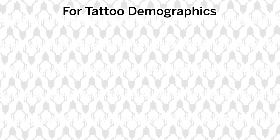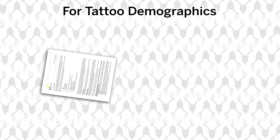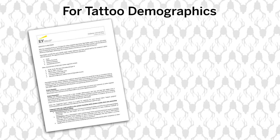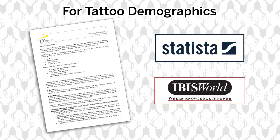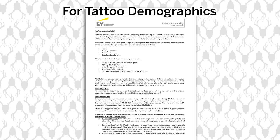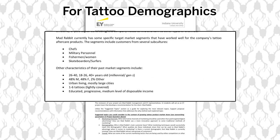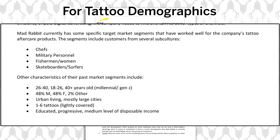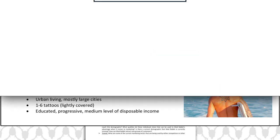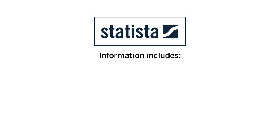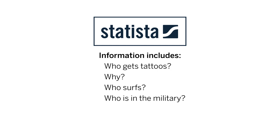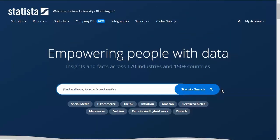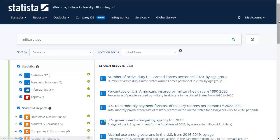To explore the demographics of the tattooed consumer, you can consult the case document as well as databases like Statista and IbisWorld. The case lists some demographics provided by MadRabbit for their customer base — in addition to age groups, the case mentions groups like fishermen and surfers. Statista also has information on who gets tattoos and why, as well as demographics like surfers and military. Searching here is very straightforward, so just put terms like "tattoo" or "military age" in the search box.